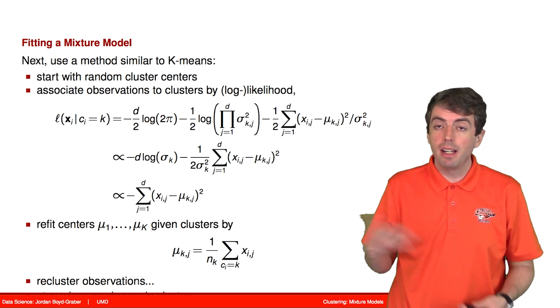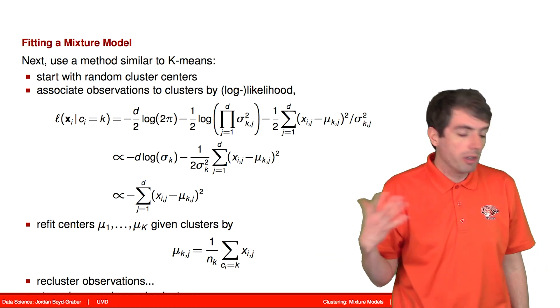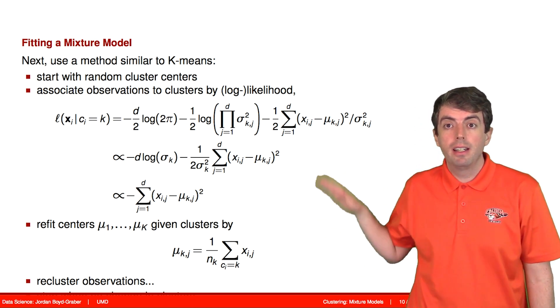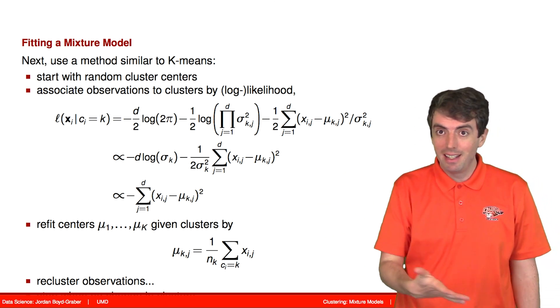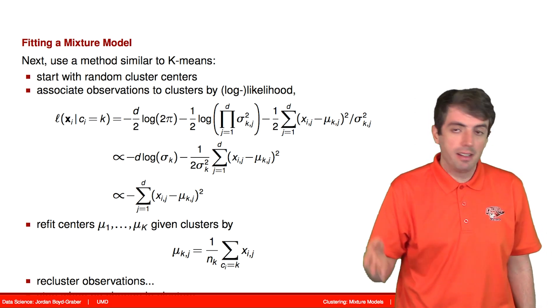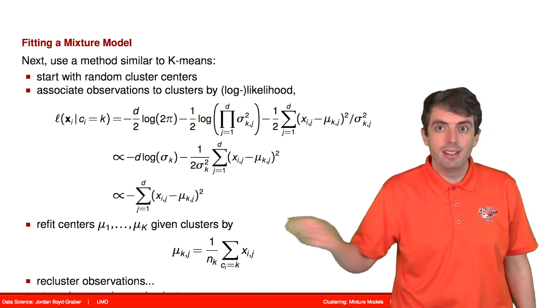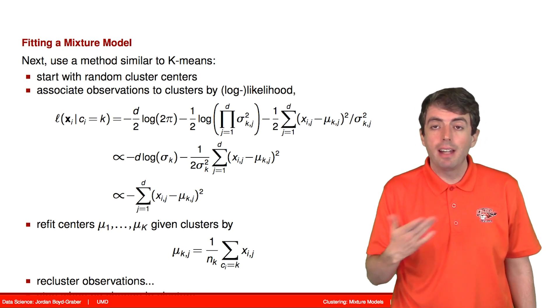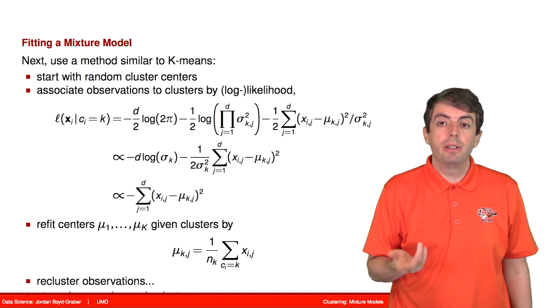And then after we assign points to a cluster, we're going to now recompute the mean in the standard way: add up all the numbers, divide by the number of points, and then we can recluster the data, and then just keep doing that, iterating through like we did for k-means.